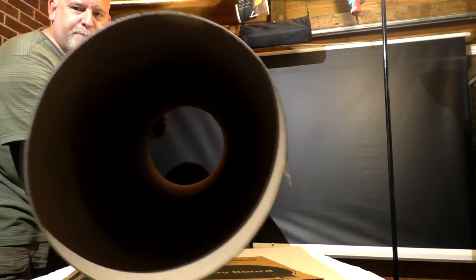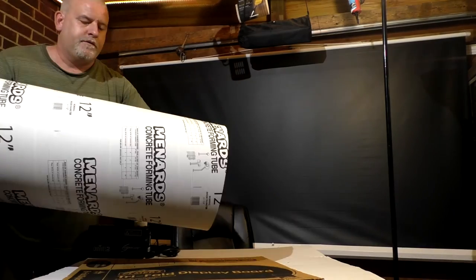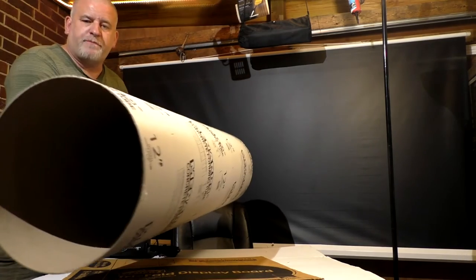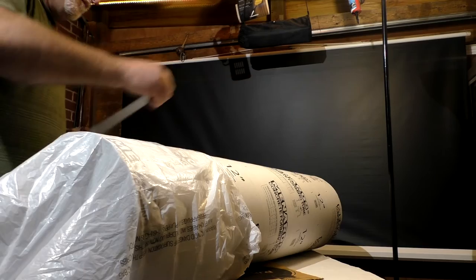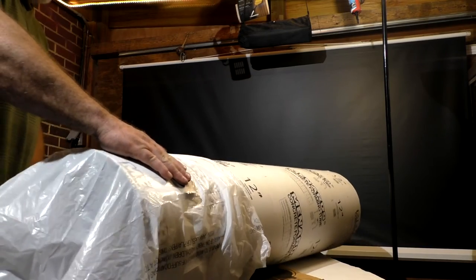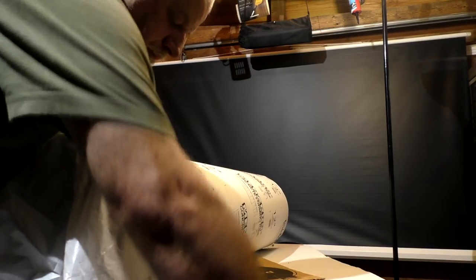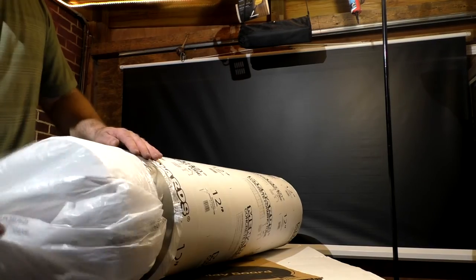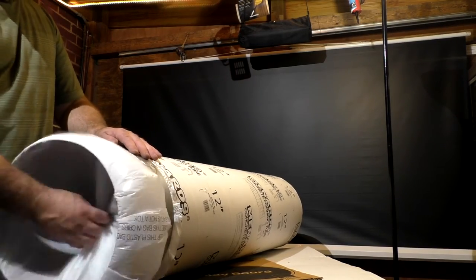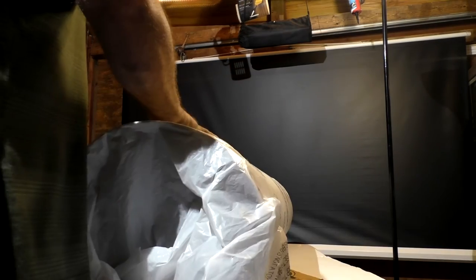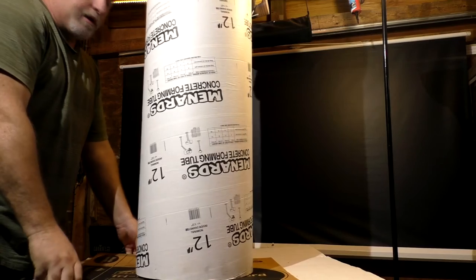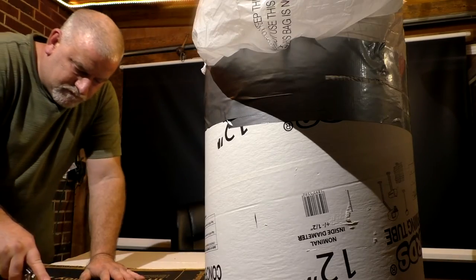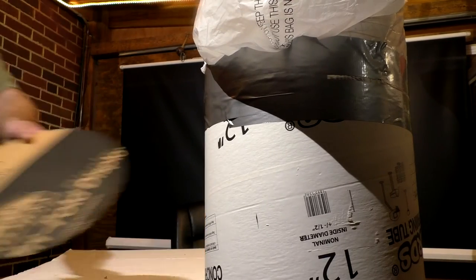Now we're going for Big Bertha. Look at that thing, this is a 12 inch form for a cement pillar. Put the garbage bag over the end. Cut a piece of cardboard over the other end, like so.